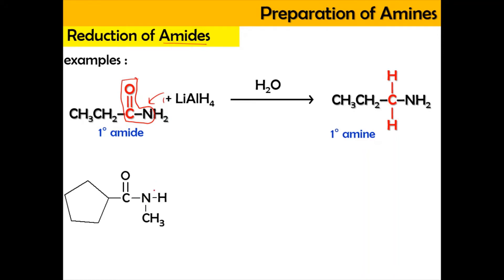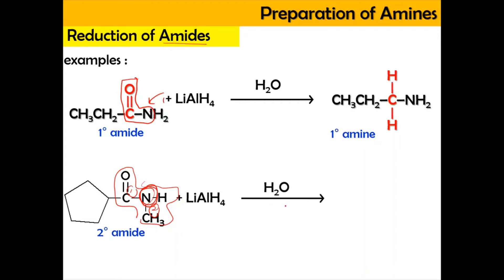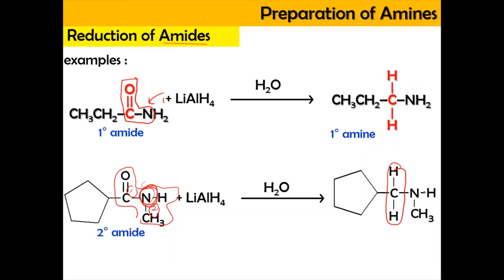Now looking at another structure: here we have an amide functional group (C-N), where the nitrogen is attached with two alkyl groups — making it a secondary amide. From a secondary amide, using lithium aluminium hydride followed by water (hydrolysis, without acid), the C=O becomes CH2, while all other groups are maintained. Hence, a secondary amine is produced.